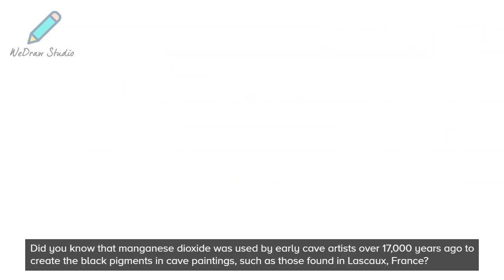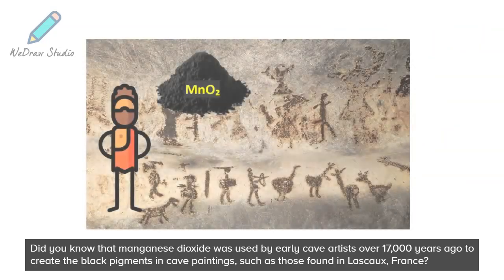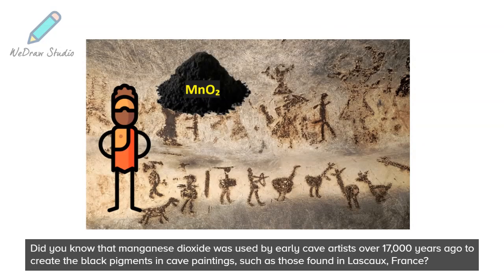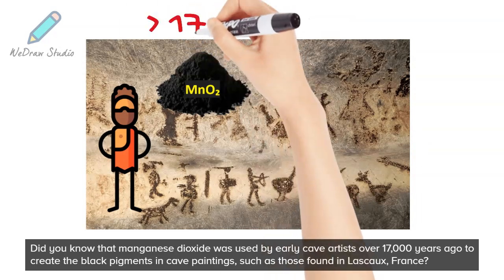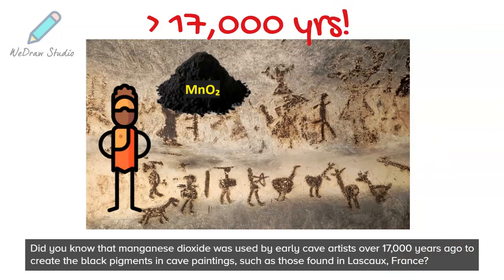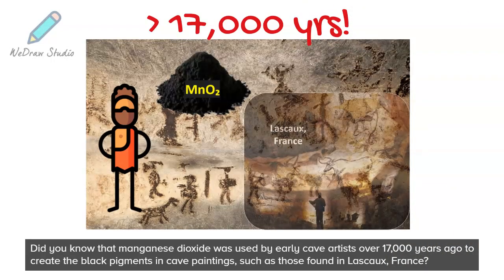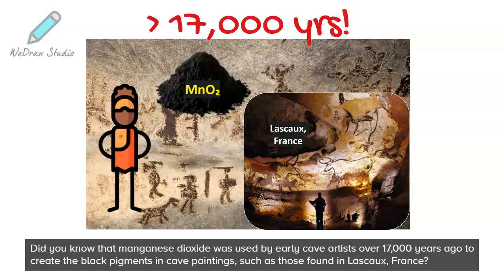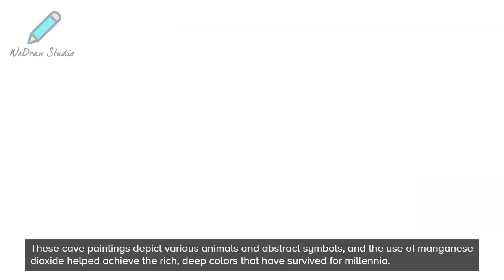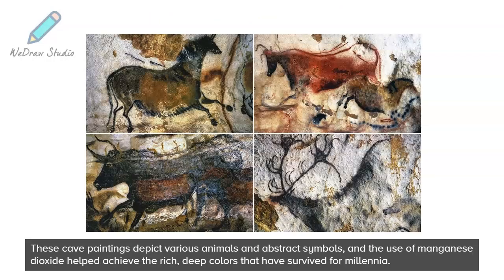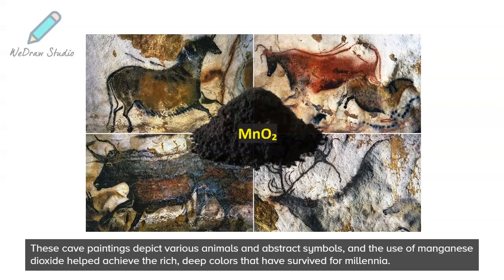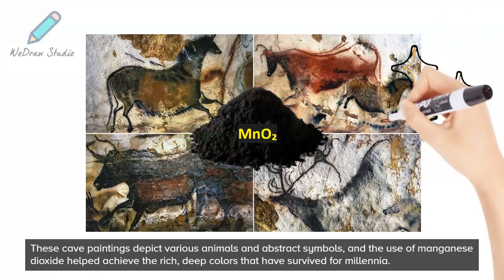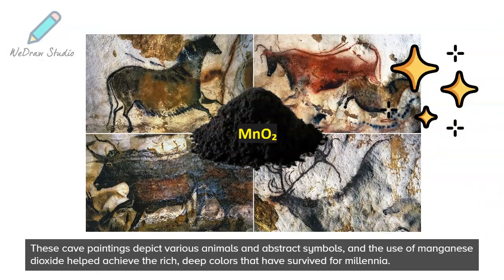Did you know that manganese dioxide was used by early cave artists over 17,000 years ago to create the black pigments in cave paintings, such as those found in Lascaux, France? These cave paintings depict various animals and abstract symbols, and the use of manganese dioxide helped achieve the rich, deep colors that have survived for millennia.